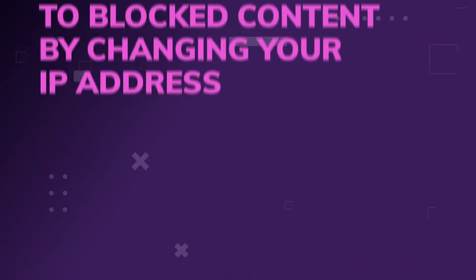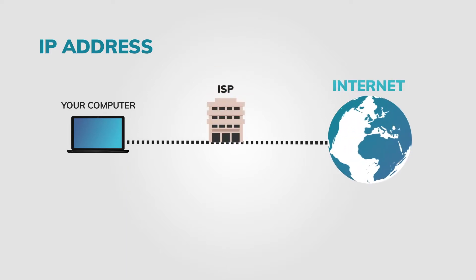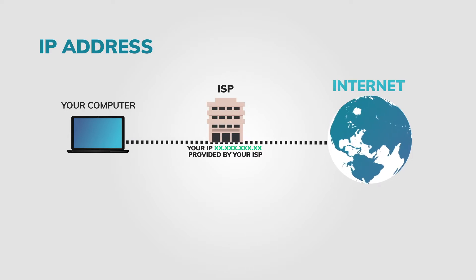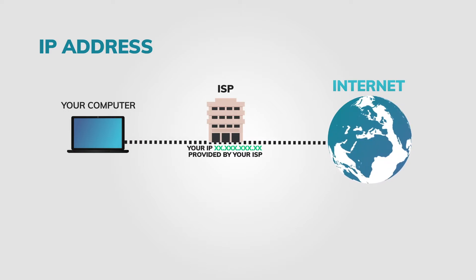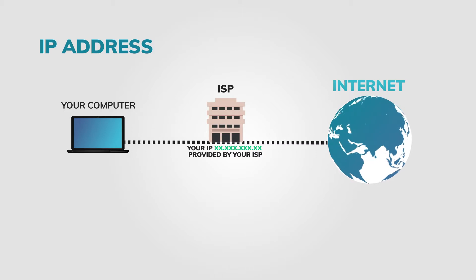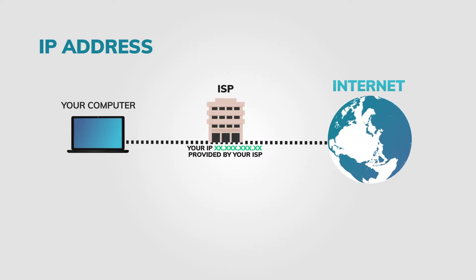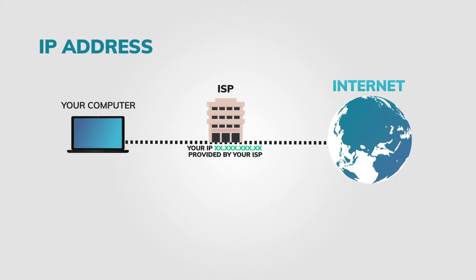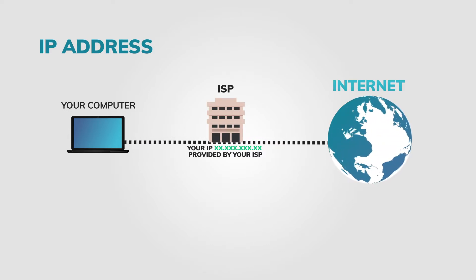And again, company networks, which is one of the original uses of the virtual private network. Now we need to talk about how a VPN gives you access to blocked content. It does this by changing your IP address. Every computer that connects to the internet has a numerical — or in the case of IPv6, an alphanumerical — address that identifies it and separates it from all the other computers. Most computers' IP addresses might change every time they reconnect to the internet, but that depends. There are ranges of IP addresses assigned to different countries, so based on your IP address, a website can usually determine at least where you are in the world.